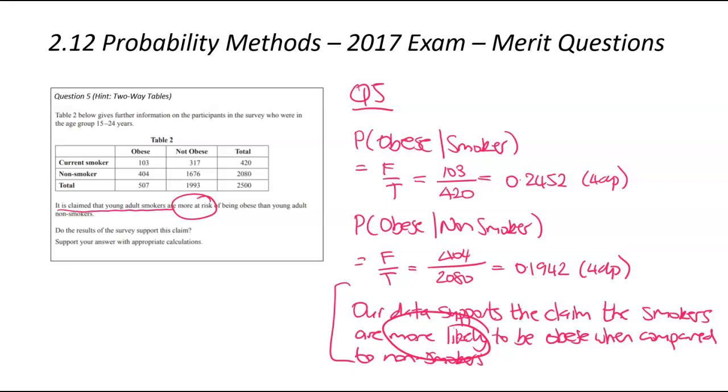So our data supports the claim that smokers are more likely to be obese when compared to non-smokers. So just to note, use the phrase more likely. We can't say that smokers are obese and non-smokers aren't obese. This is always a degree of probability, I'm sure. There's people in the world, maybe there are people who smoke and their body's absolutely fine. And then there's people who are obese who don't smoke as well. So it is a degree of probability. We can't be certain about it. Hence why we use phrases like more likely.